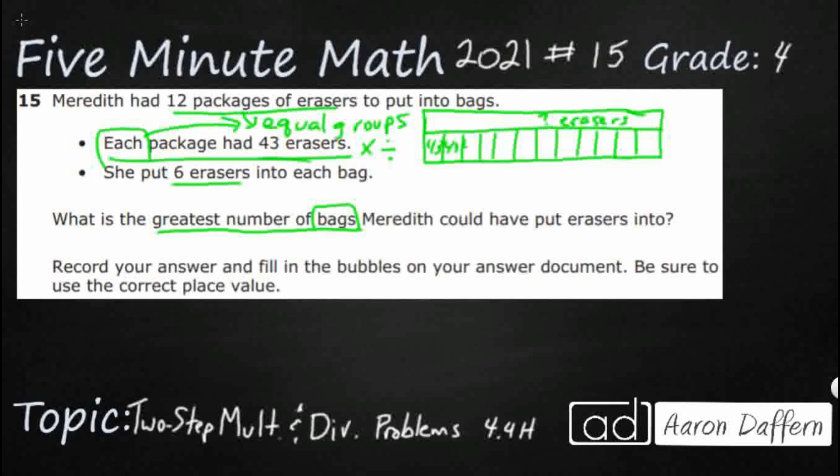So one way would be to just add 43 twelve times, but hopefully you see that a better way to do that would be to go ahead and just multiply 43 times 12. So that's going to get me my total number of erasers.